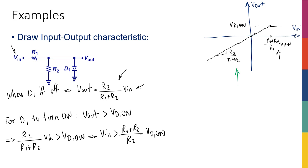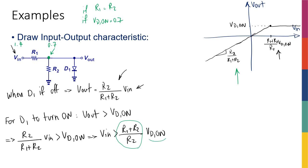The turning point is greater than Vd_on because only a fraction R2/(R1+R2) of Vin appears at the diode node Vx. For a numerical example: if R1 = R2 and Vd_on = 0.7 V, then only half of Vin reaches Vx. When Vin = 0.7 V, Vx is only 0.35 V — not enough to turn on the diode. Vin must reach at least 1.4 V so that Vx = 0.7 V and the diode turns on. That's why the turning point is (R1+R2)/R2 · Vd_on = 1.4 V.